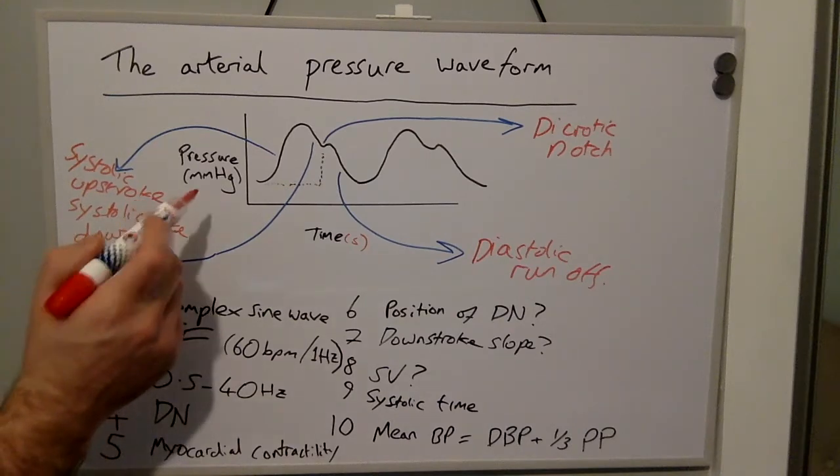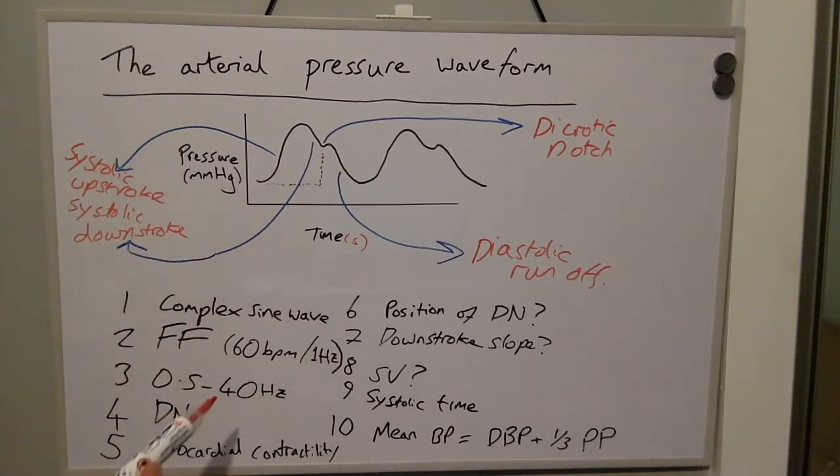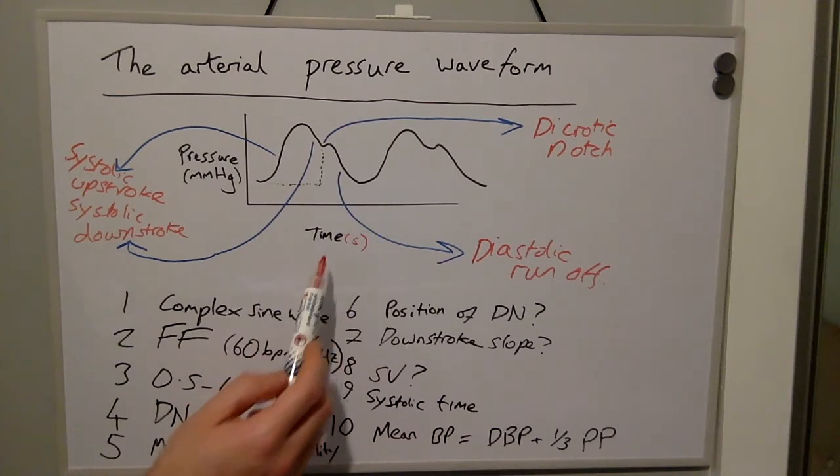On the y-axis we have pressure in millimeters of mercury and on the x-axis we have time in seconds.